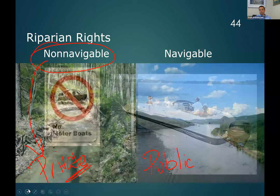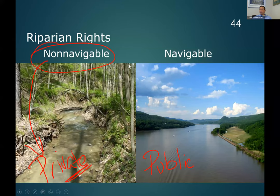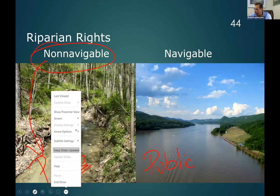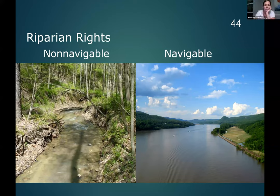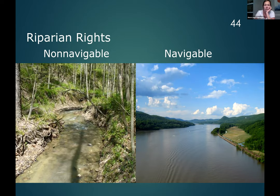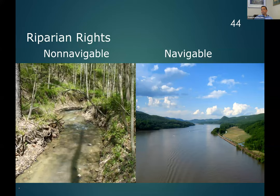Here's why that matters. Looking at two pictures: on the left, a body of water that's not navigable — we all agree you couldn't navigate a boat through that. On the right, a very much navigable body of water. The body of water on the left is most likely private. The body of water on the right is public.